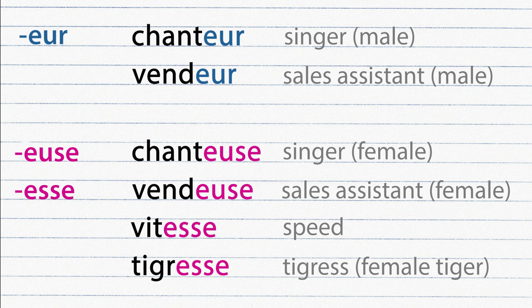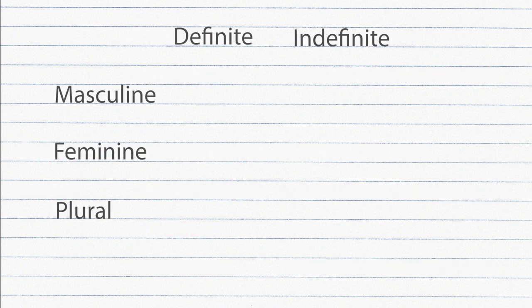But not every noun ends like these examples and a better way to know and remember if a noun is masculine or feminine is to learn the noun with its definite or indefinite article. These are the definite and indefinite articles in French.